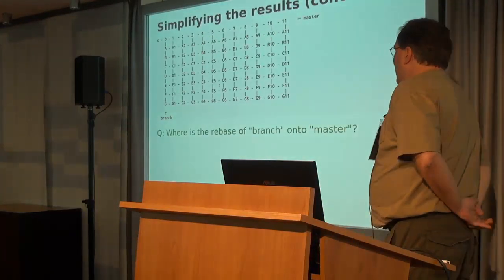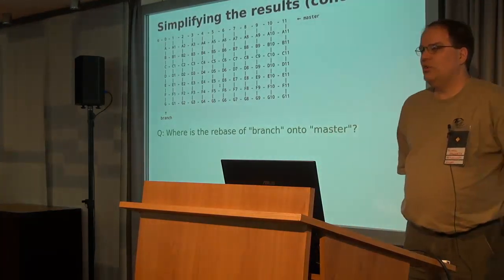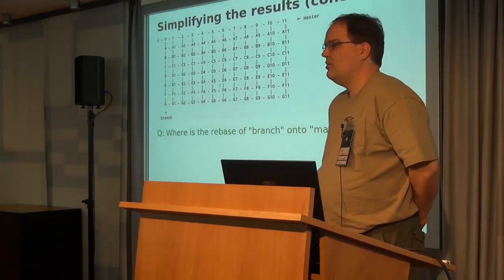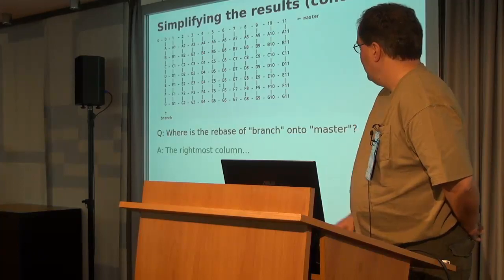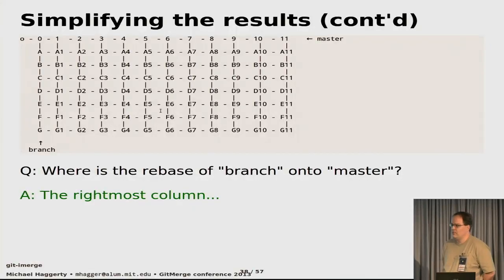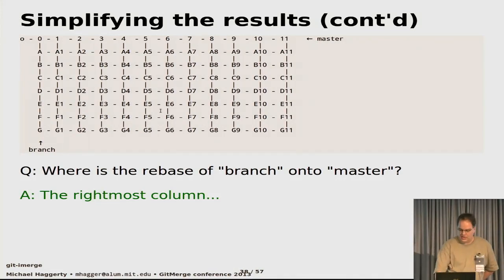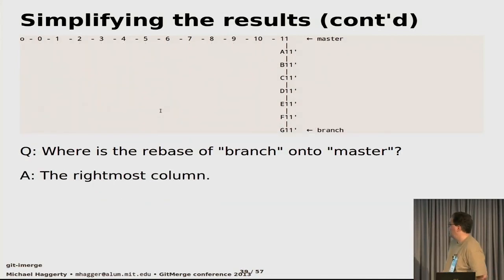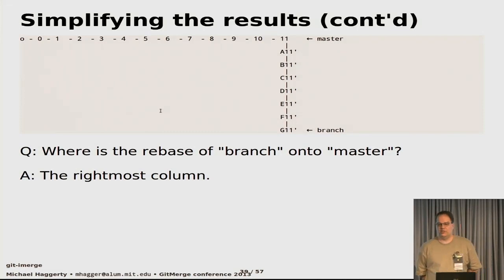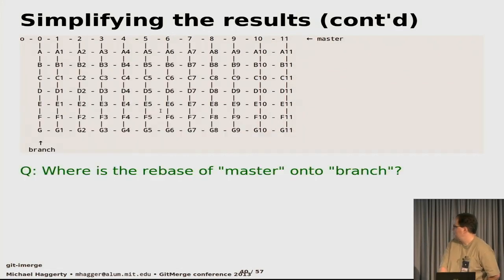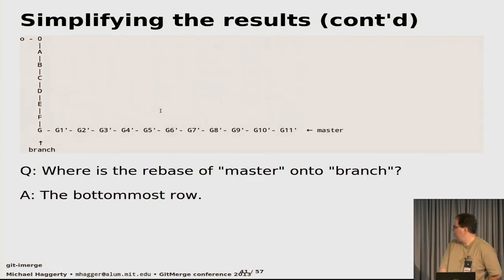Next question: where is the rebase of branch onto master? The answer is the rightmost column — those commits are essentially commits A through G rebased over to the current tip of master. You can have the tool rewrite your history to look like a traditional rebase. Similarly, you can find the rebase of master onto branch — that's the bottom-most row of commits — and by rewriting those commits you can transform the repository to look like that rebase.